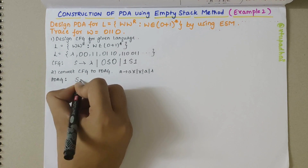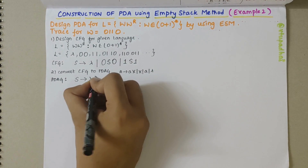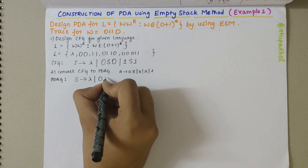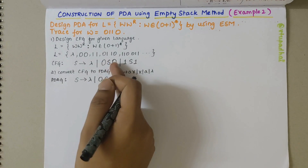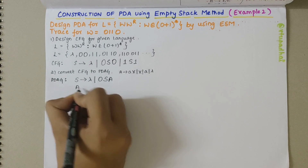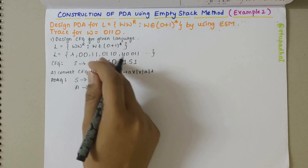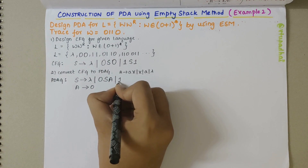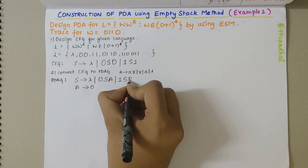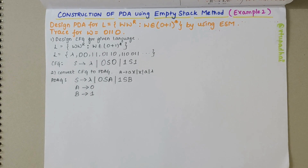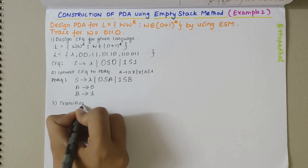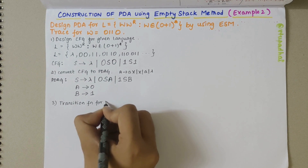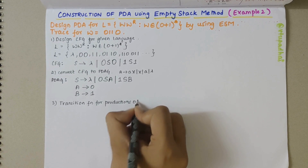Obeying this rule, I get: S derives lambda. For 0·S·0, since we can't have a terminal at the end, I introduce A where A derives 0, giving S derives 0·S·A. Similarly for 1·S·1, I introduce B where B derives 1, giving S derives 1·S·B. This is the acceptable PDAG. My next step, step 3, is to write the transition functions for the productions of PDAG.